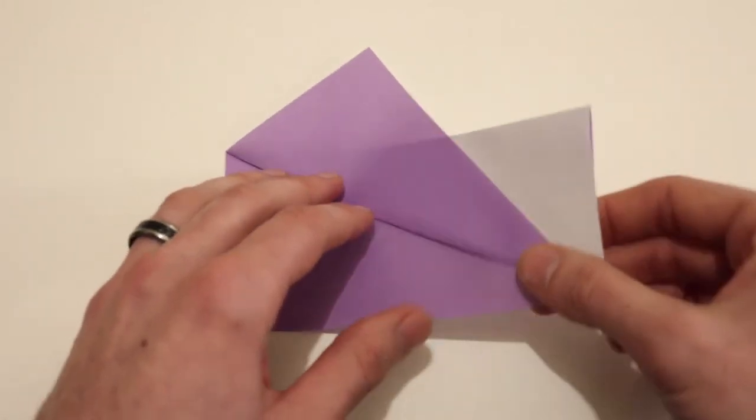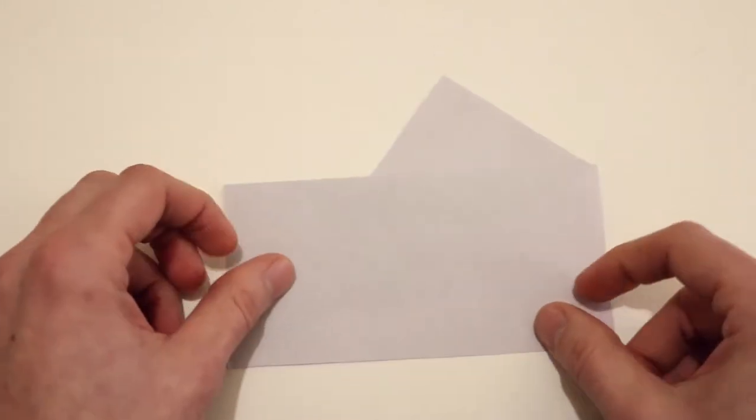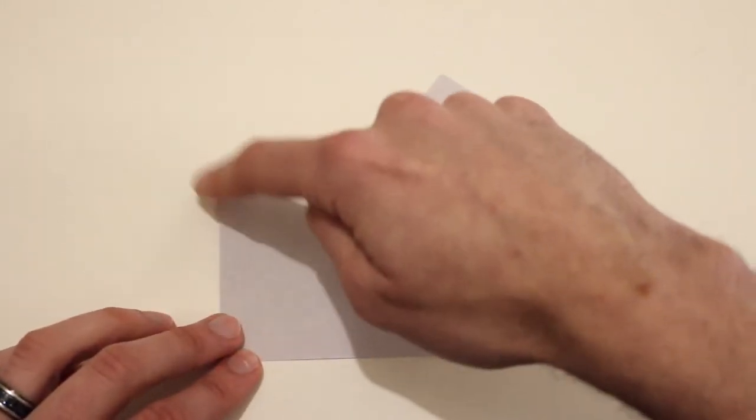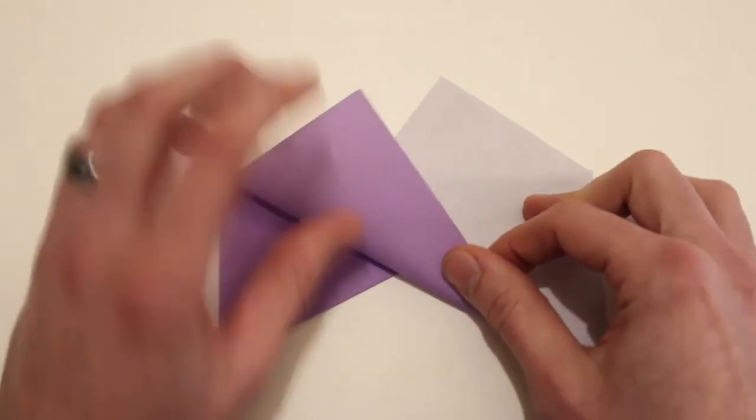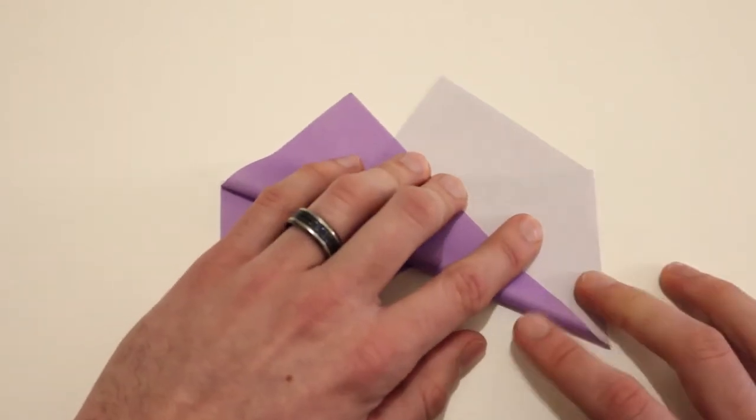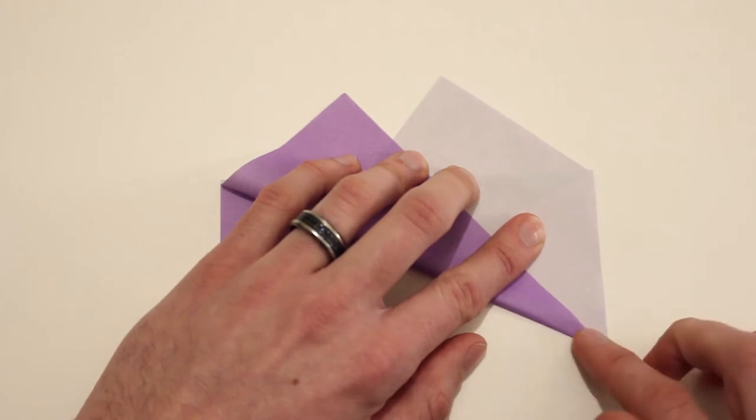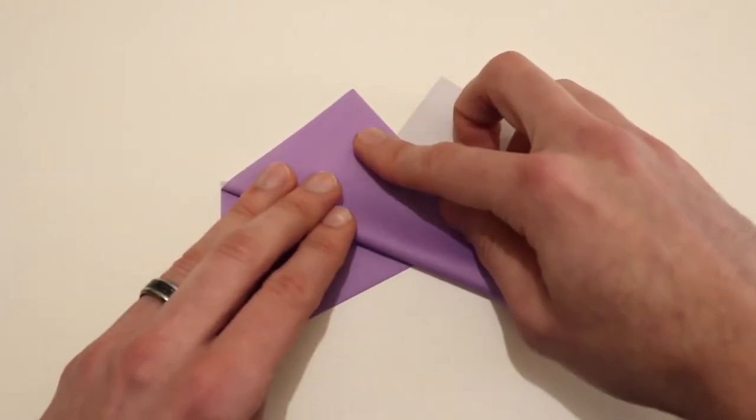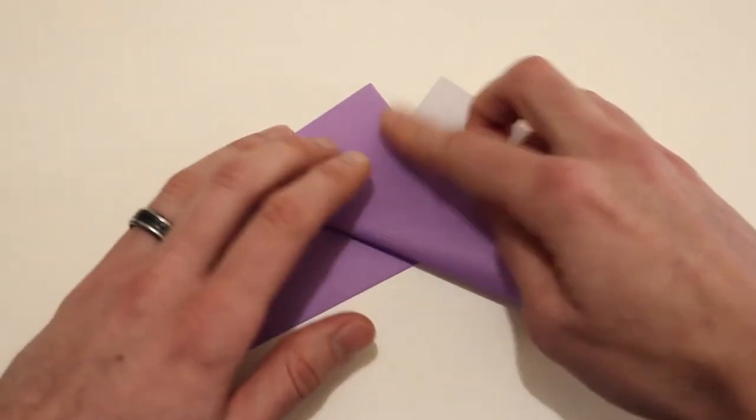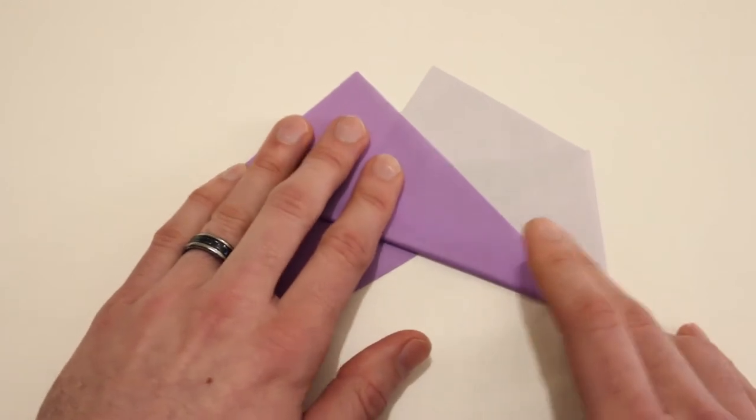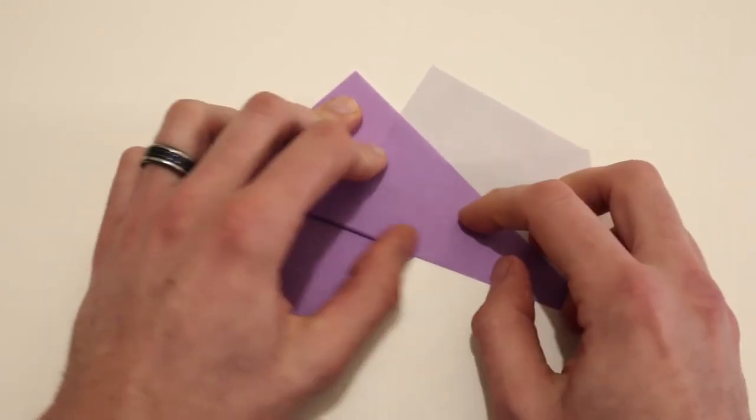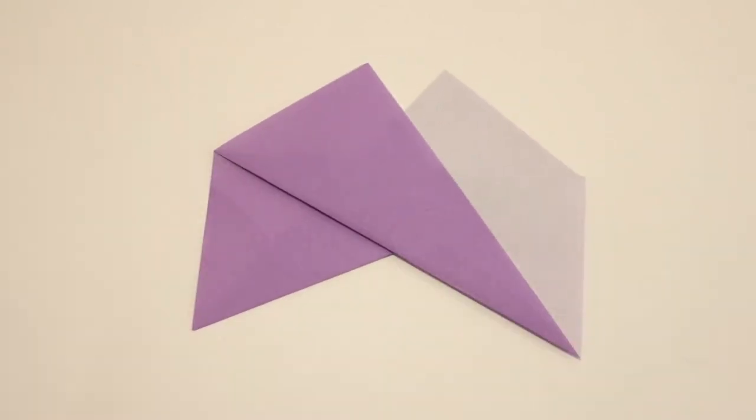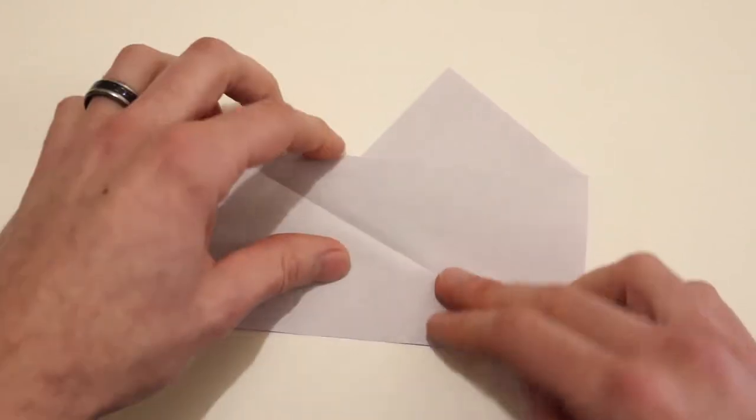Next we're going to turn the paper over and we'll do the same thing on this side, connecting this corner with this corner. Fold it up, make our pinch marks here. Then I hold those while I pull the paper up and then crease it. Then we'll unfold all of that.